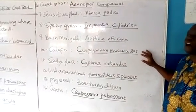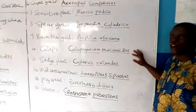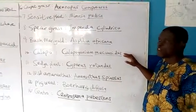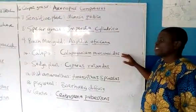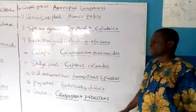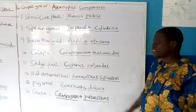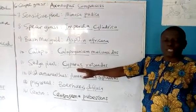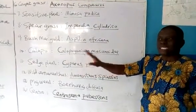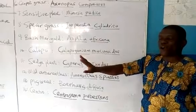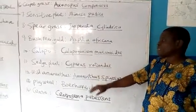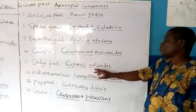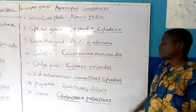Then we have what we call Calipogonium, or Calopogonium mucunoides. This one is also a forage or a weed, but it is leguminous in nature. We also have what we call Sedge plant. Most sedge plants look like stubborn grass but they are not — they are in their own group. Sedge plant is called Cyperus rotundus.